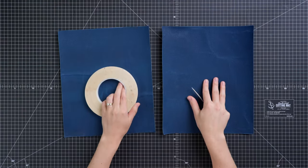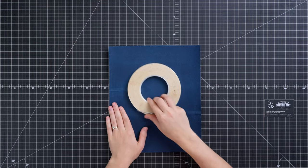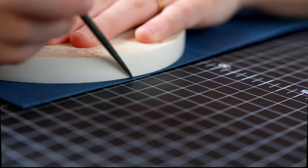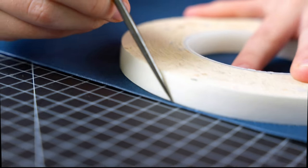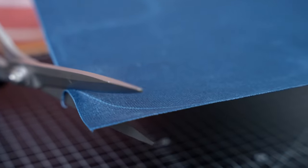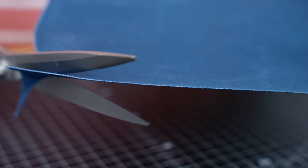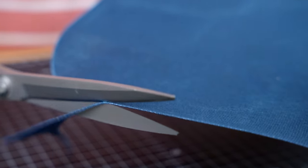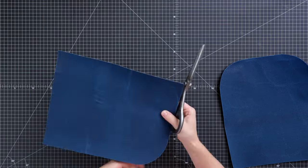After all our pieces are cut out, we're going to take our two side pieces and round the top corners. We're going to be using a roll of basting tape as an outline for our rounded corners. If you don't have basting tape on hand, our corners will have a radius of three inches. We will mark the shape with our scratch awl and then cut it out.